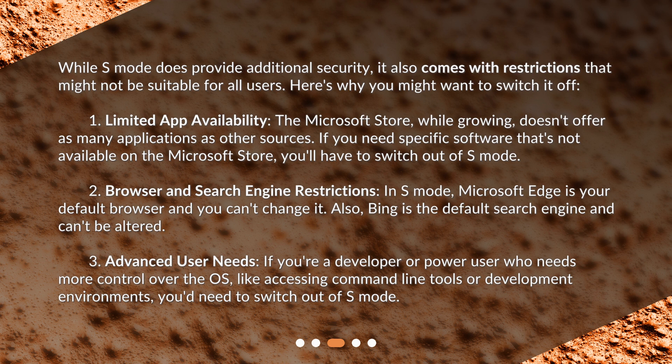Second, browser and search engine restrictions. In S-Mode, Microsoft Edge is your default browser and you can't change it. Also, Bing is the default search engine and can't be altered. Third, advanced user needs. If you're a developer or power user who needs more control over the OS, like accessing command line tools or development environments, you'd need to switch out of S-Mode.